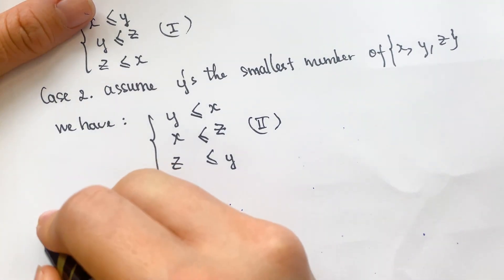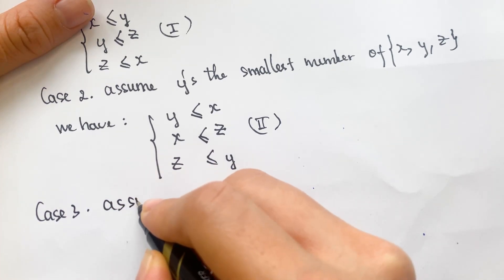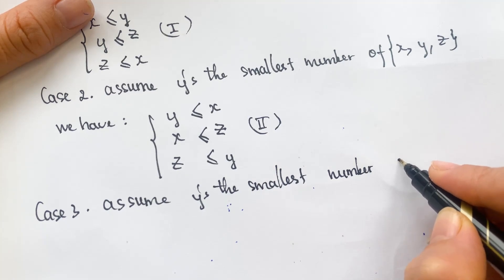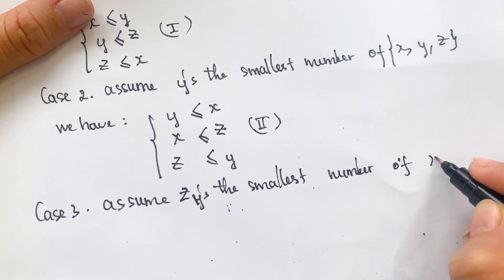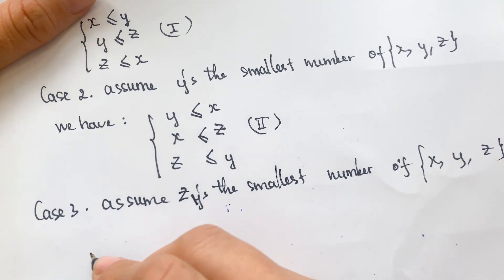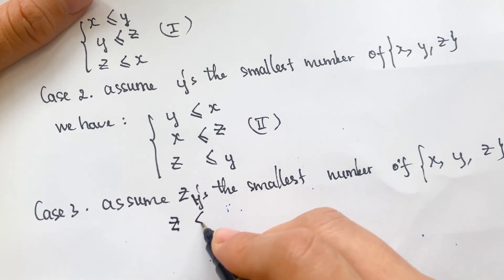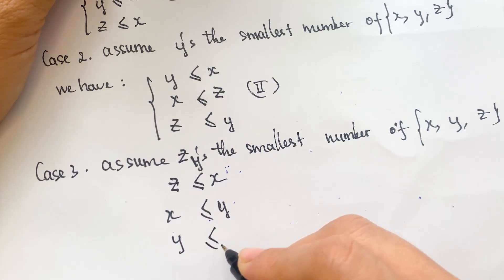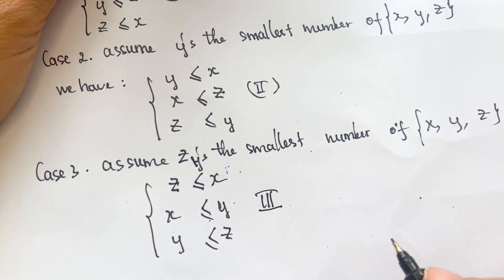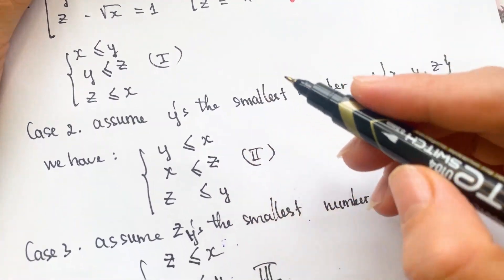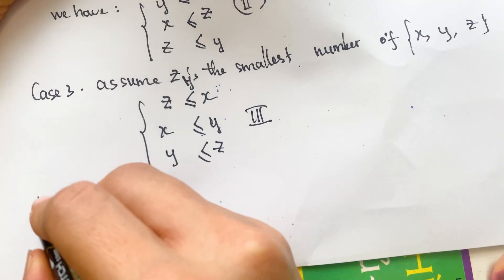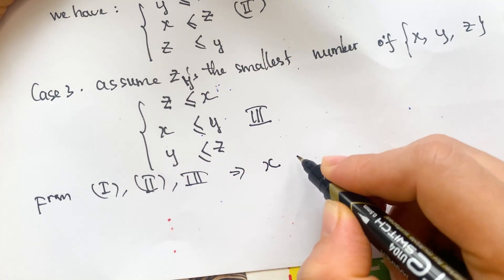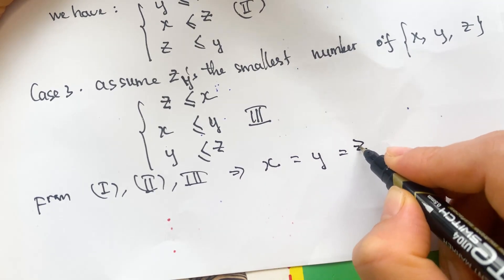For case three, assume z is the smallest number. Everyone can see from cases one, two, and three, we have x equals y and y equals z.